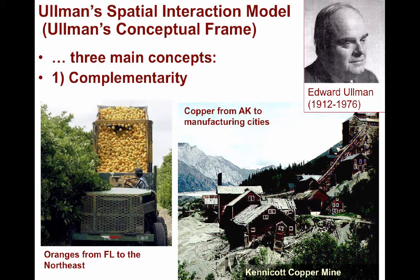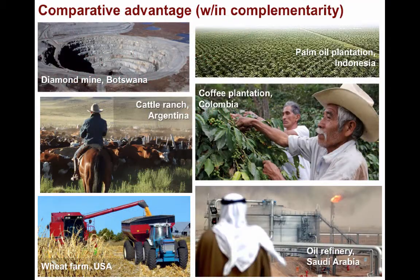In simpler terms, a sawmill requires logs while a forest would provide them. People in the northeast would like to have oranges but cannot grow them locally. Within complementarity is the term comparative advantage, which provides a relative measure of economic complementarity between two countries with respect to regional specialization. One nation will export goods to another when it can produce certain goods at a lower relative cost. Countries like Botswana for diamonds and Indonesia for palm oil each have a comparative advantage because of their location, climate, or natural resources.